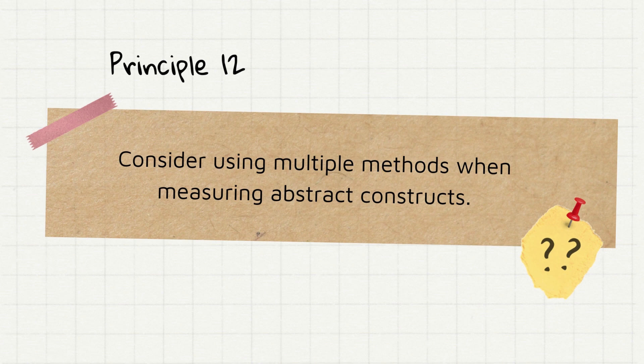Now, still grounded on the previous principle, principle 12 states to consider using multiple methods when measuring abstract constructs. Taking self-esteem as an example once more, a researcher could make the participants answer the Rosenberg Scale, and then use another method or instrument to measure self-esteem once more. Technically, this principle speaks about the concept of triangulation.